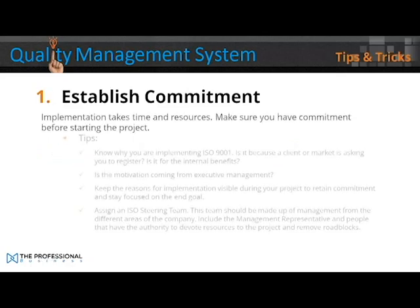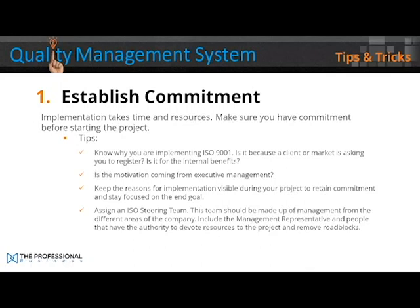Step 1: establish commitment. Implementation takes time and resources, so make sure you have commitment before starting this project. Know why you're implementing ISO 9001 — is it because a client or market is asking for you to register? Is it for internal benefits? Is the motivation coming from executive management? Keep the reasons for implementing visible during the project to retain commitment and stay focused on the end goal. Assign an ISO steering team made up of management from different areas of the company, including the management representative and people with the authority to devote resources and remove roadblocks.